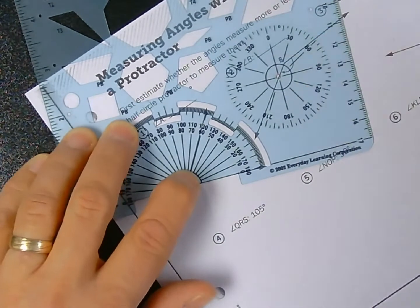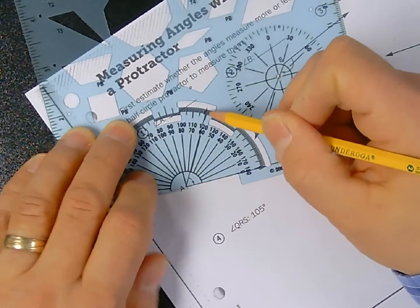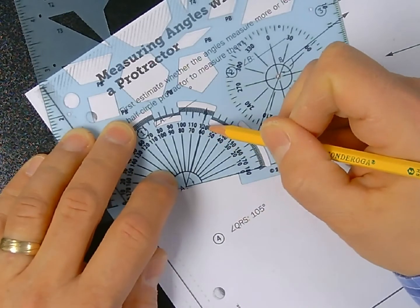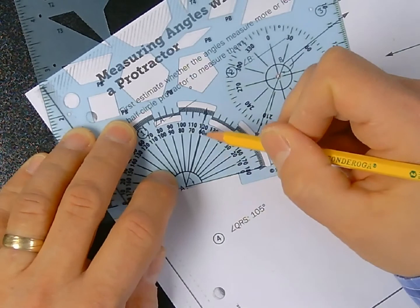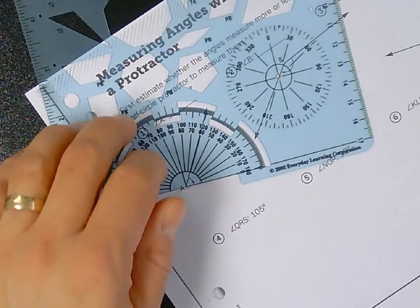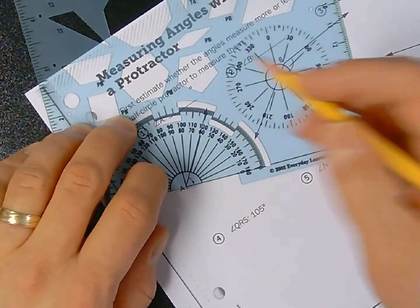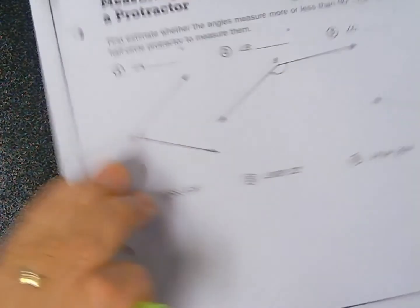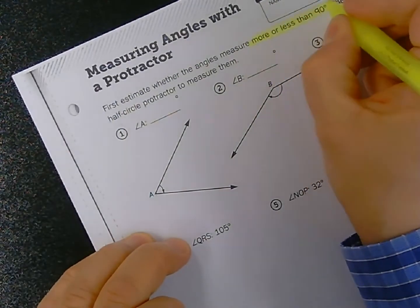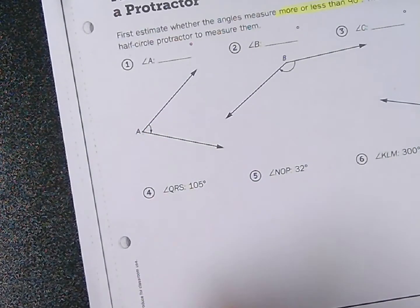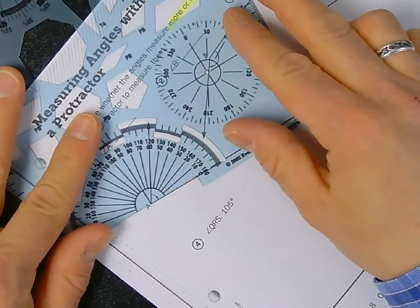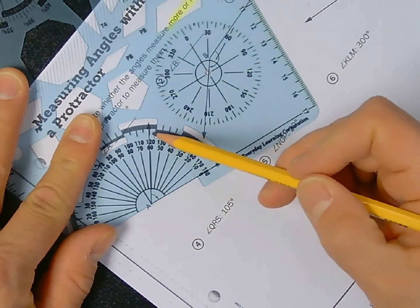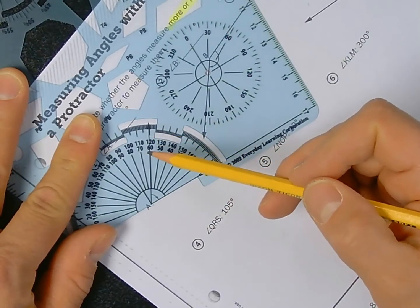So as you can see my line here kind of corresponds or overlaps where it says both 60 and 120. Now this is where it gets confusing for some kids is that you have two measurements. Which one is it? Well the reason why they asked you to first estimate whether or not the angles are more or less than 90 degrees is that if you've already determined that this is less than 90 degrees, then the measurement has to be the number that is smaller than 90 degrees or less than 90 degrees, which has to be 60 degrees. 120 is more than. So that means that would be the measure of an obtuse angle.